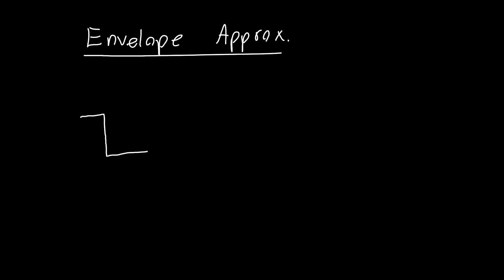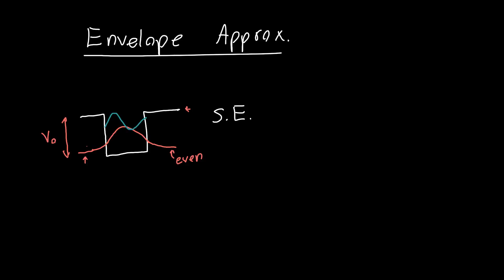In this video we're going to be talking about the envelope approximation and its significance. In the last few videos we've been dealing with quantum wells and solving the Schrödinger equation in them. For a finite quantum well we know what the wave functions look like: sinusoidal functions inside the well and exponentially decaying outside. These are the two different solutions depending on V0, giving us even states and odd states.